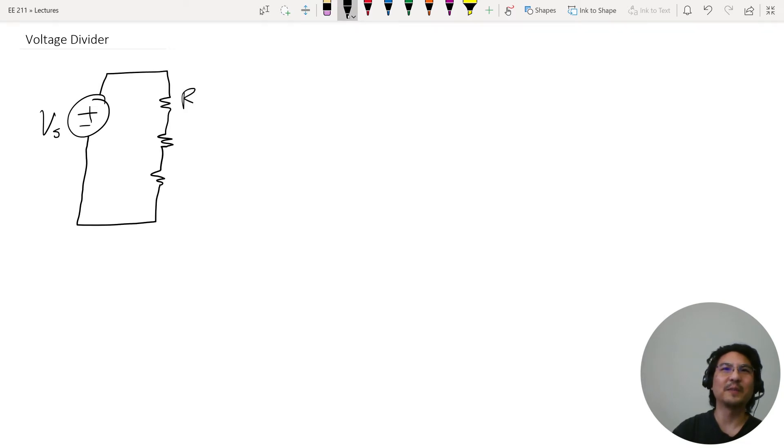then the concept is this current, whatever current is coming out of here, because all these resistors are in series, it's all the same current. So all three, if you have ten of them, however many, they all have the same current.